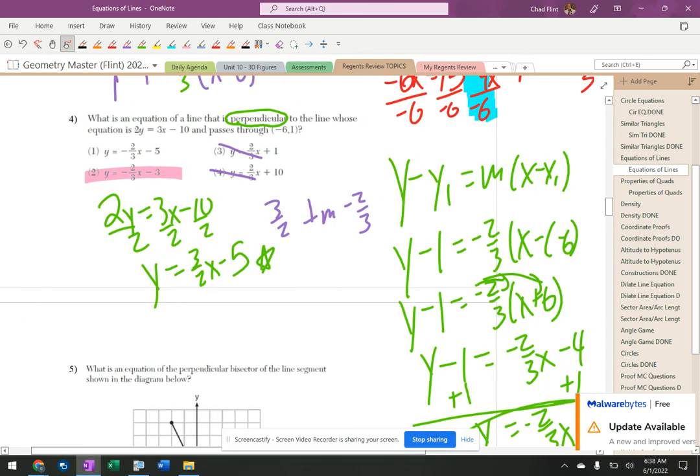I could have also put options 1 and 2 into my calculator and see which one went to the point negative 6, negative 1. That's fine also, but I like to stick to what if it wasn't multiple choice, because it's not always going to be multiple choice.